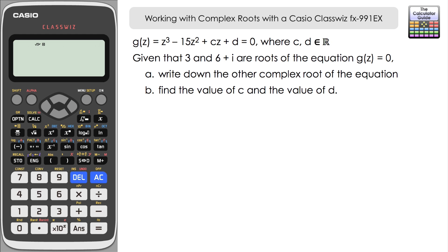Given that 3 and 6 plus i are roots of the equation G(Z) equals zero, we have to write down the other complex root of the equation, and then in part B find the value of C and the value of D.